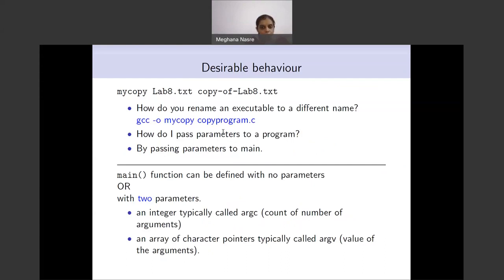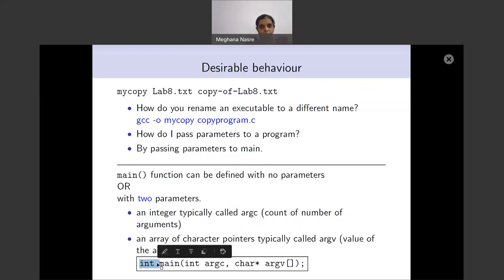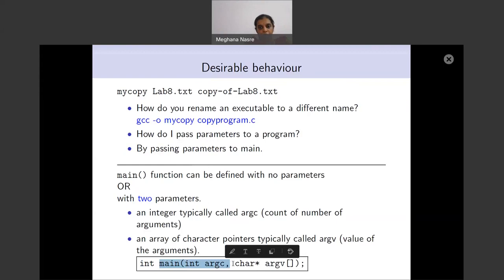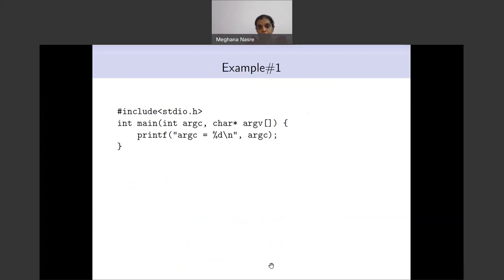Now we are going to use the feature of having parameters for main, which are argc and argv. The prototype of main will look like this: int main(int argc, char* argv[]). int is the return type; argc is the number of arguments; argv is an array of pointers to characters, which will contain the different arguments we want to send.